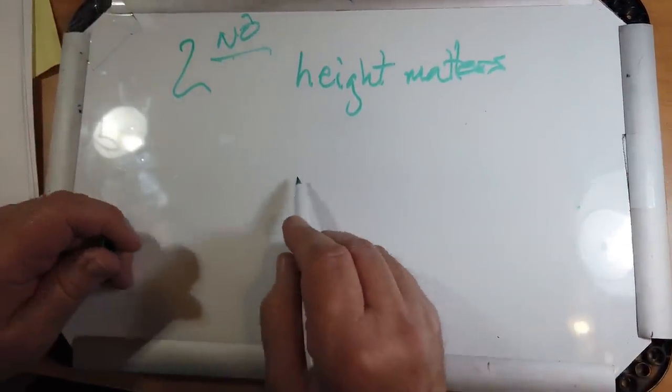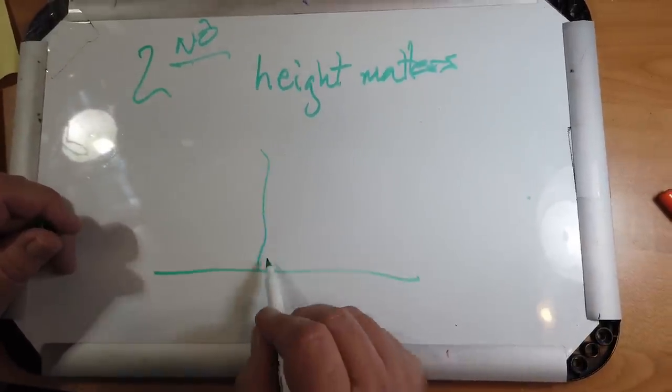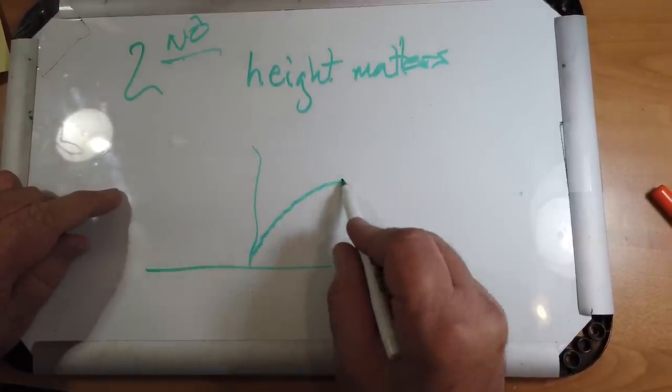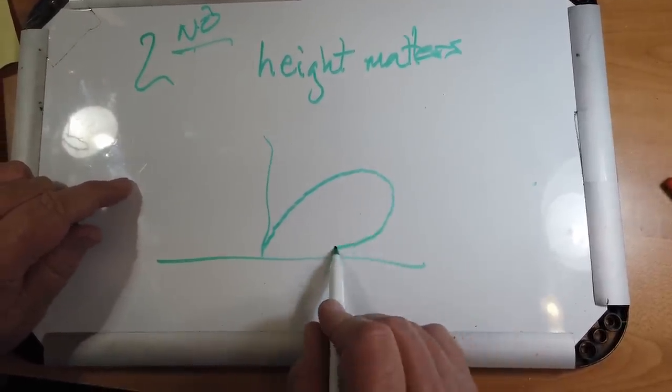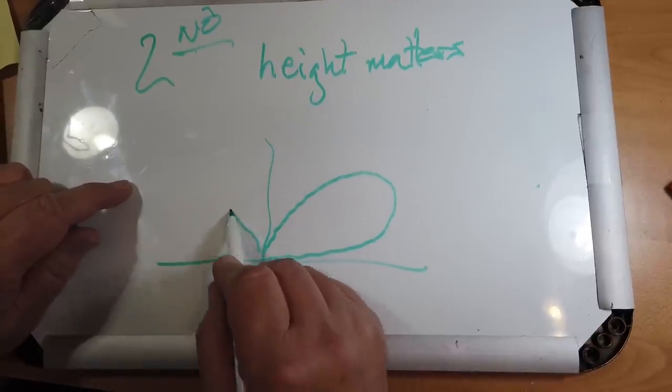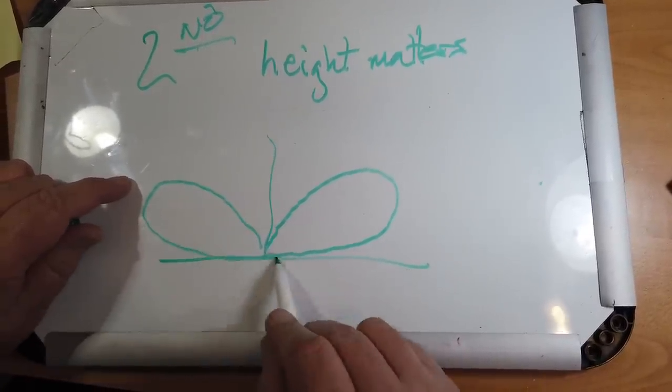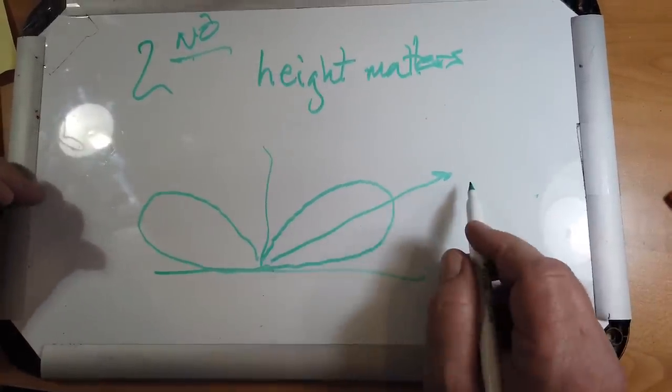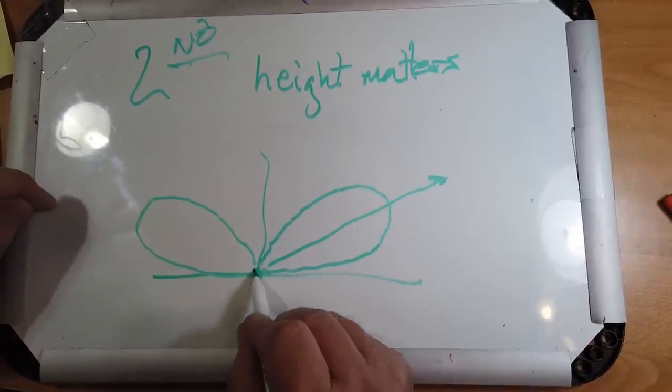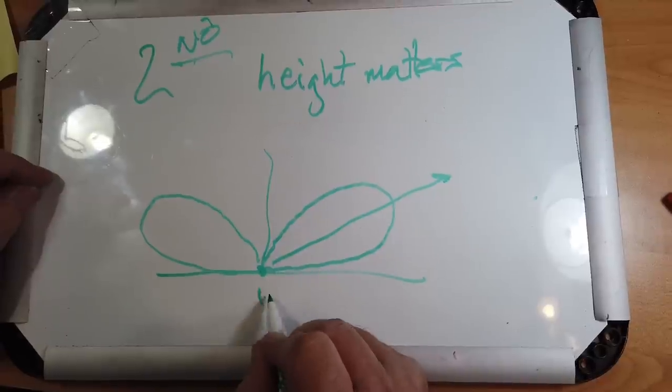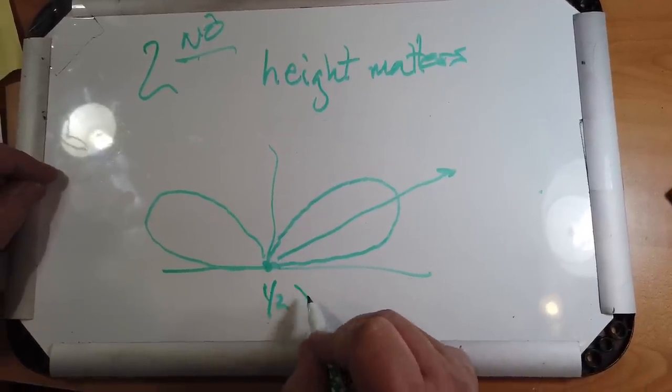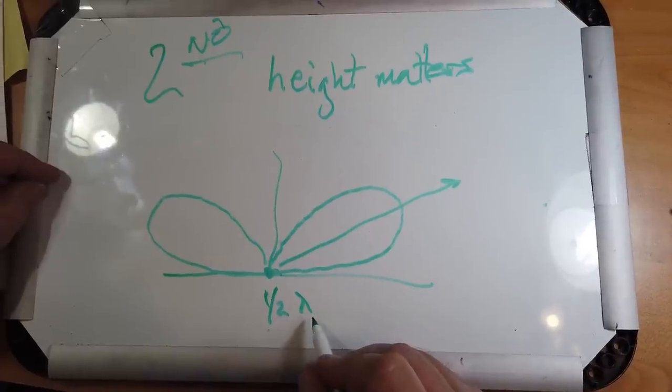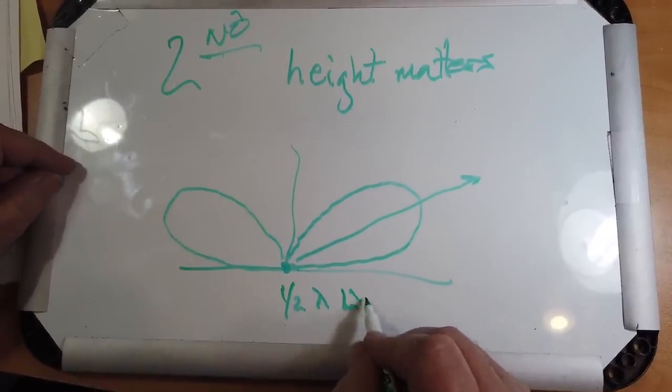If you want to have, and I'll just show you an elevation pattern for a dipole at optimum height, it looks about like this. So your angle of radiation, your best angle of radiation is kind of like this. If this antenna is at a half wavelength, that's a lambda, which stands for wavelength, half wavelength high.